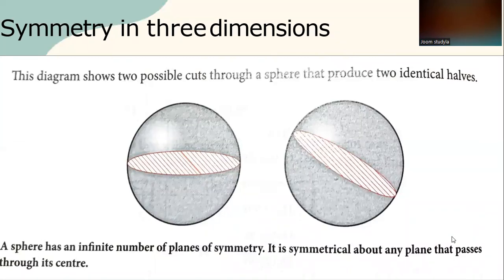This diagram shows two possible cuts through a sphere that produce two identical halves. A sphere has an infinite number of planes of symmetry, so it is symmetrical about any plane that passes through its center.